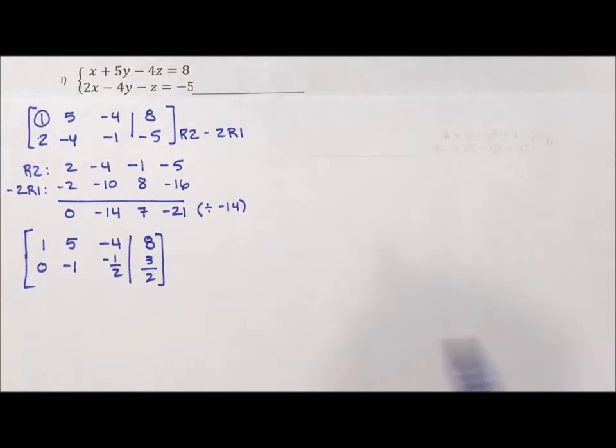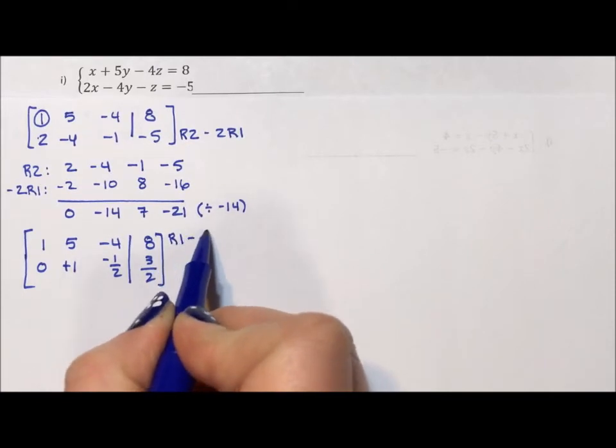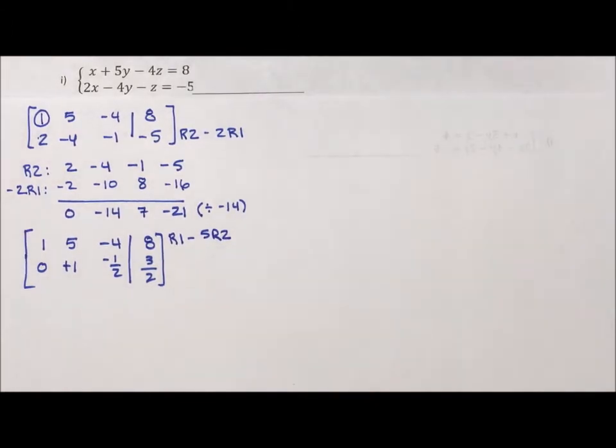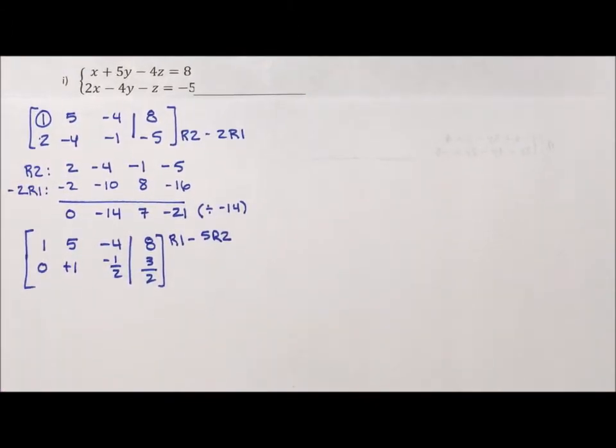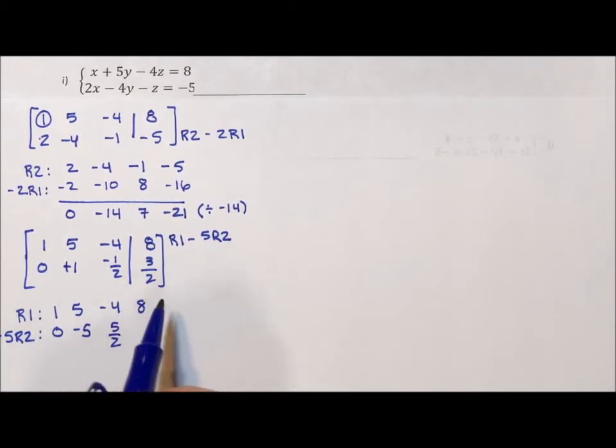Now what I want to do is use this 1 to clear the 5. So I'm going to say row 1 minus 5 row 2. Okay, so to do this, I'm going to start with row 1. Row 1 is 1, 5, negative 4, 8. Negative 5 row 2 is 0, negative 5. A negative 5 times 1 half, you only multiply the numerator, that becomes a positive 5 halves. Negative 5 times 3 halves becomes a negative 15 halves.